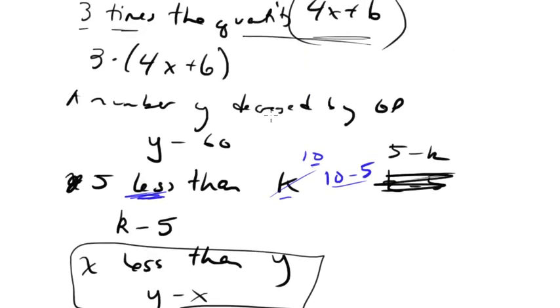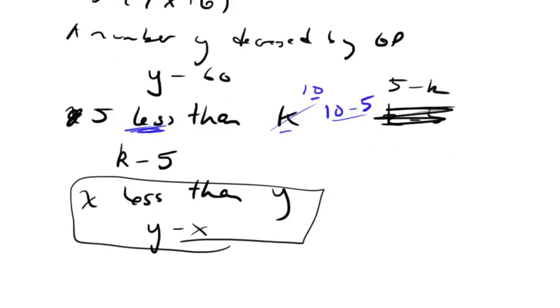Because with addition, it doesn't really matter. If it's x more than y, it could be x plus y, y plus x, it doesn't matter. They're commutative. But with subtraction, it does matter, because y minus x does not necessarily equal x minus y. So therefore, we've got to be very careful with the order we put those in.